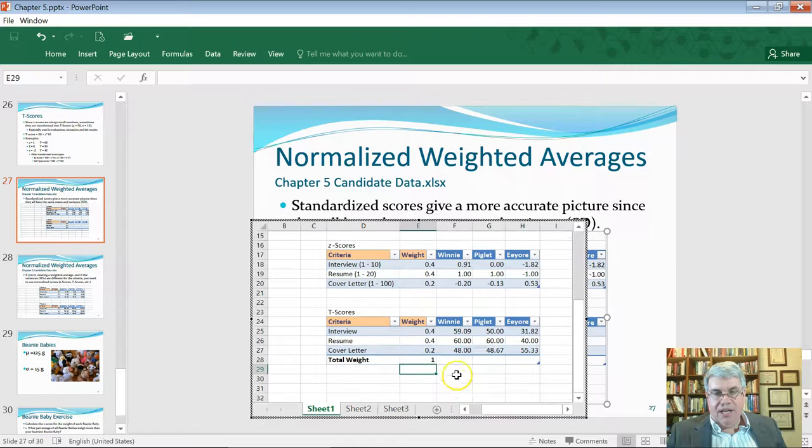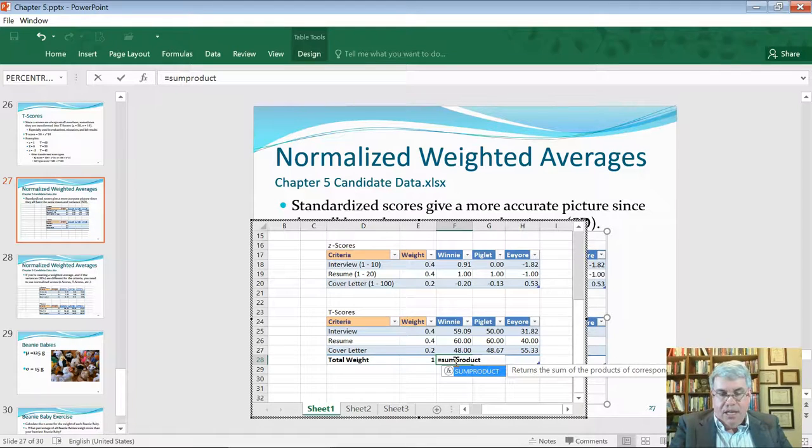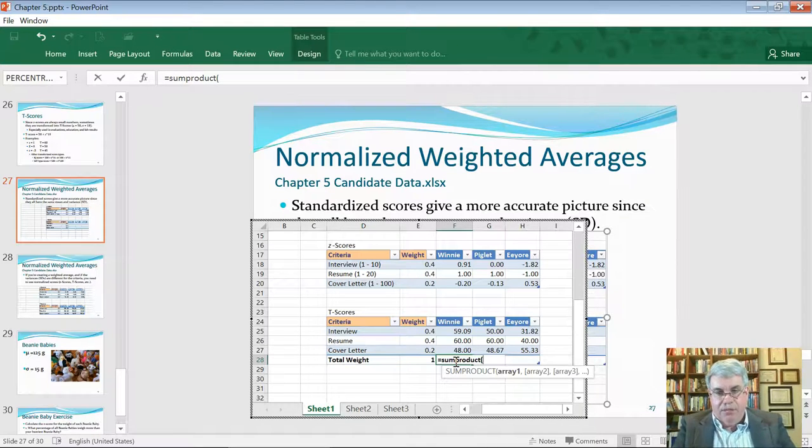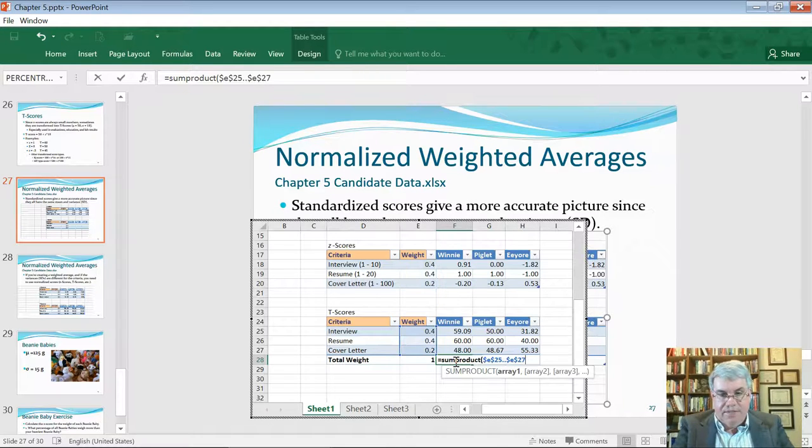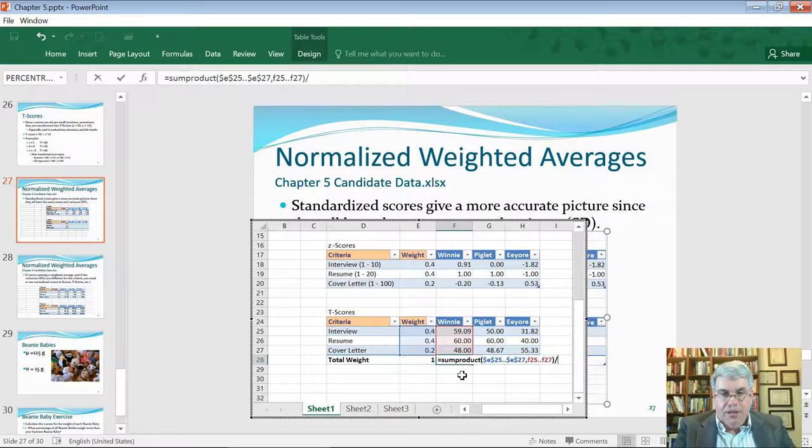And now, we're going to have the weighted average for Winnie, and we're going to use the sum product. So, we're going to use equals sum product, open parentheses. And now, the weight, we don't want it to change. So, I'm going to do dollar E, dollar 25, dot, dot, dollar E, dollar 27. And that will be the first weight, and we will multiply that by F25, dot, dot, F27, Winnie scores. And we'll do the close parentheses, and then we'll divide it by the total weight.